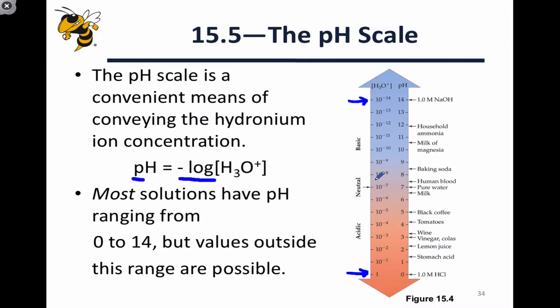Neutral water contains a hydronium ion concentration of 10 to the negative 7 moles per liter. So any solution with a pH greater than 7, meaning a hydronium ion concentration less than 10 to the negative 7, is what we would consider basic.